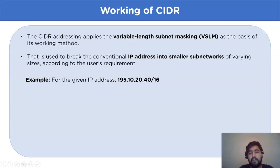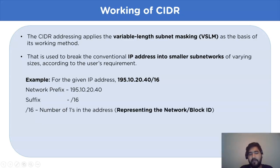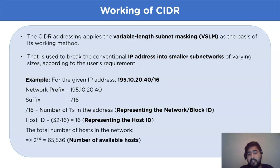In the given example, the IP address is 195.10.20.40/16. From the given IP address we can determine the network prefix, which is 195.10.20.40, whereas the suffix represents the /16 part. The number 16 represents the number of ones in the address, known as the block ID or network ID. The host ID is determined using 32 minus 16, giving a host ID of 16. The total number of available hosts is 2 to the power of 16, which equals 65,536 available hosts in this network.